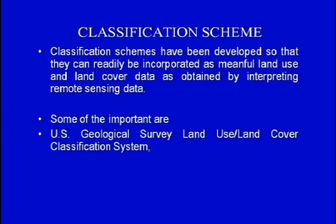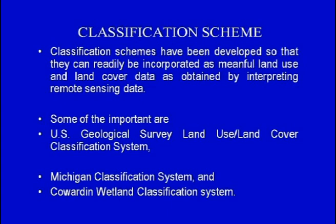Some of the important classification schemes are the USGS land use/land cover classification scheme (USGS LULC), the Michigan classification scheme, and the Cowardin wetland classification scheme. The last two are specific classification schemes: the Michigan scheme focuses primarily on urban-related information classes, devoting more attention to different types of urban units that may be identified.